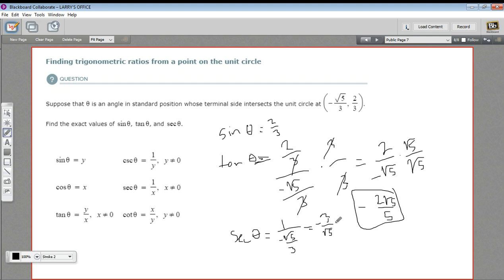Again, we'll need to rationalize that denominator. So I'm going to multiply by the square root of five over the square root of five. So we're going to get a negative. On the top, we're going to get three times the square root of five. And on the bottom, we're going to get five. There's our secant of theta.